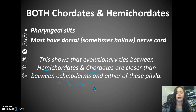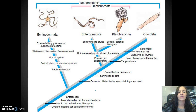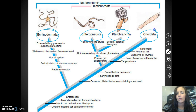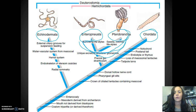Let's take a minute and look at this cladogram. If you have your notes, go ahead and sketch this, or fill it into the organizer box. We show echinoderms here, then Enteropneusta, then Pterobranchia, then we go into Chordata. These two are hemichordates, and then Chordata are the chordates.